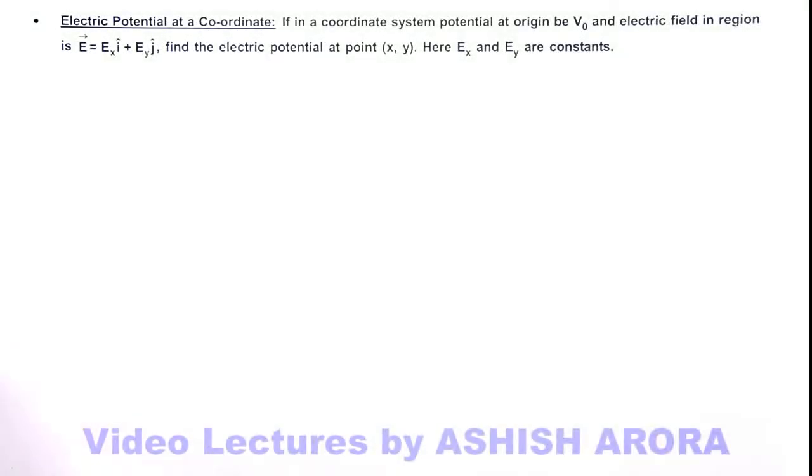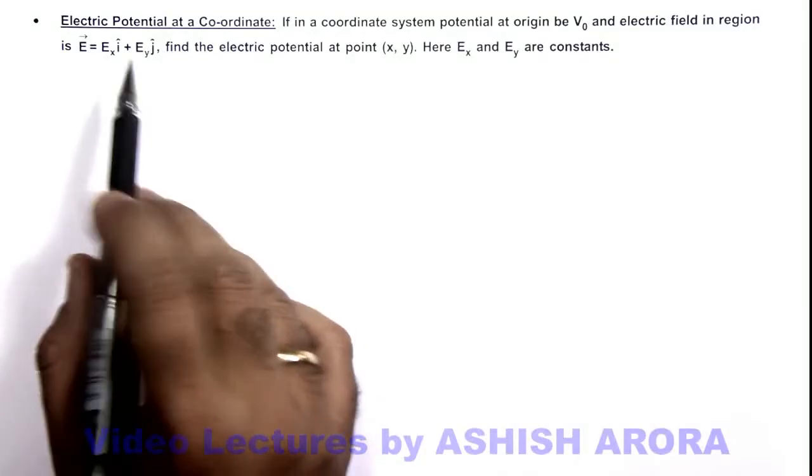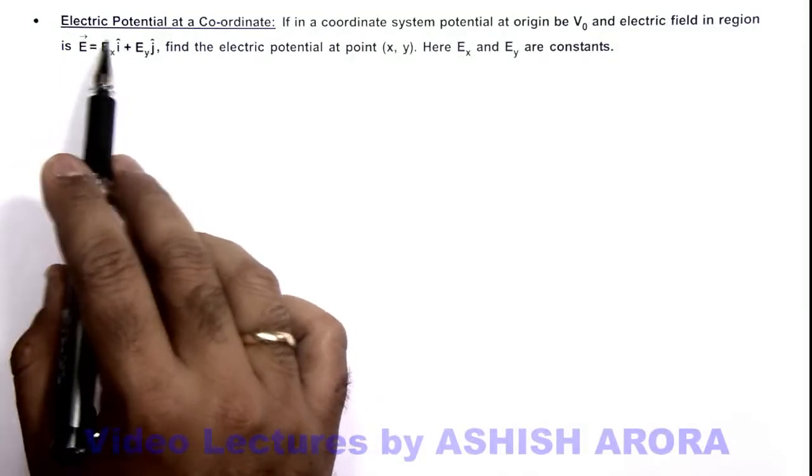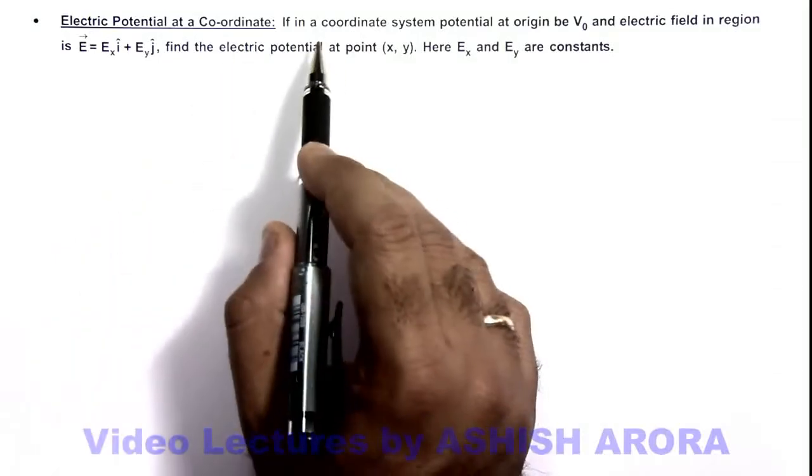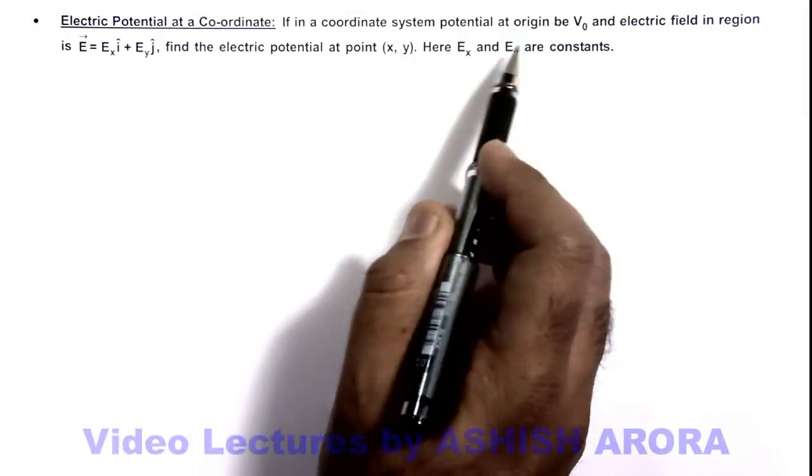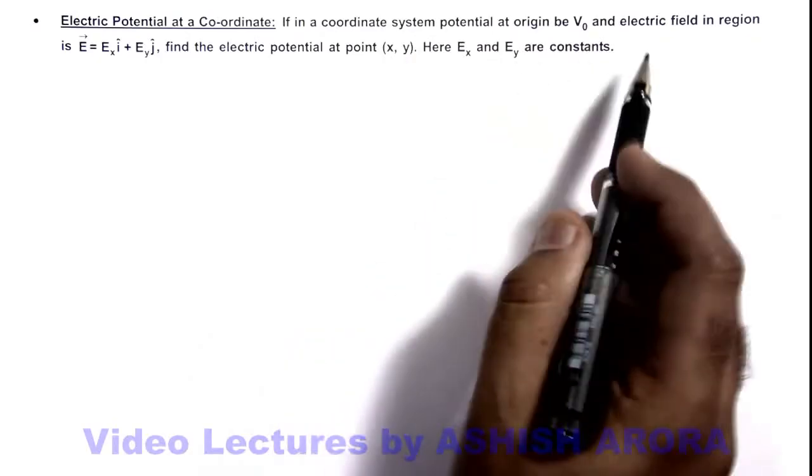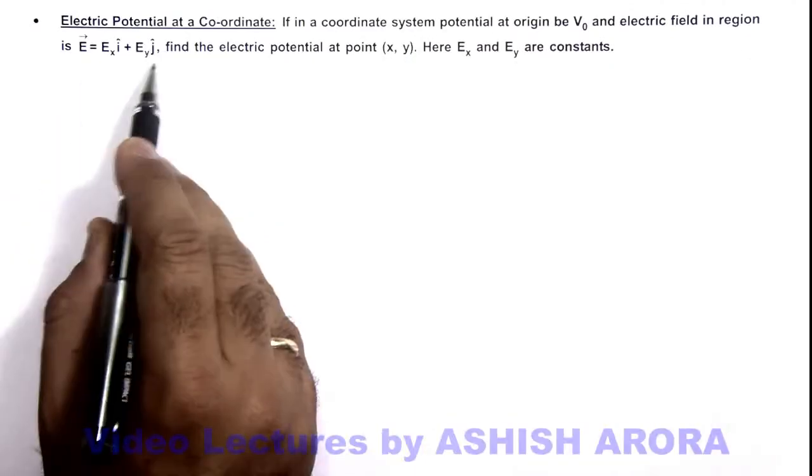Dear students, let's analyze another illustration of calculating electric potential at a coordinate. Here we are given that if in a coordinate system potential at origin is V₀, and electric field in the region is given by this vector expression.